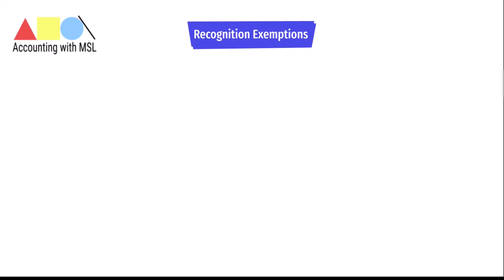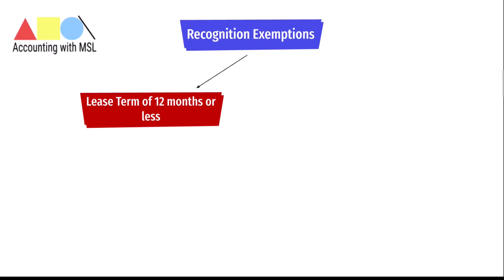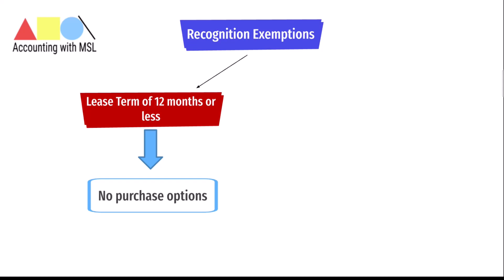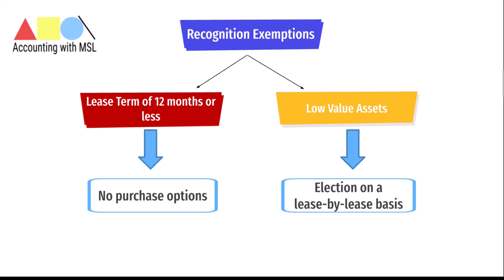Now, what items are exempted from being recognized as leases under IFRS 16? Instead of applying the general recognition requirements, a lessee has the right to elect to account for lease payments as an expense on a straight-line basis over the lease term for two main classes. The first is leases with a lease term of 12 months or less that contain no purchase options — this election is made by class of underlying assets. The second is leases where the underlying asset has a low value when new, such as personal computers or small items of office furniture, and this election can be made on a lease-by-lease basis.